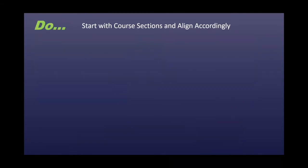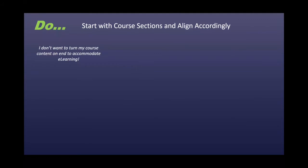The next item is a do: start with course sections and align accordingly. We often hear from teachers who say, I don't want to turn my course content on end to accommodate e-learning. If somebody is telling you that you have to do that, that's probably not the best partner. The relationship should work the other way around — we should take your course content and find ways to use e-learning to enhance it.